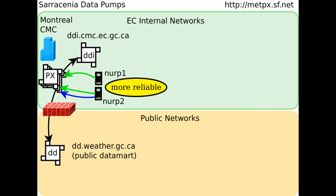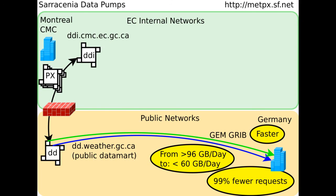For distribution, products are sent out to one data pump for consumers inside Environment Canada, and a second one for the public. Last spring, a German company adopted the new methods. They went from 15 million requests per day on the public web server to 150,000 — a 99% reduction. All that polling traffic consumed about 30 GB per day. Now they are only using 60 GB per day, the size of the data they actually want. And they are getting it faster.